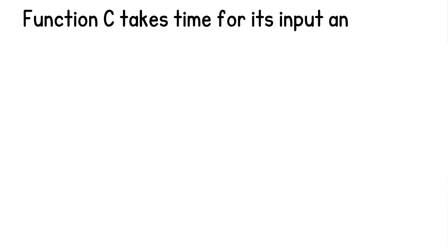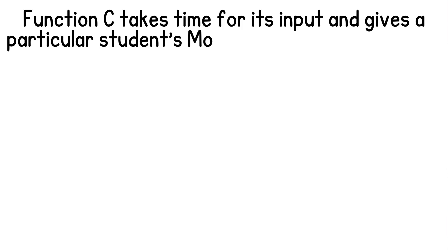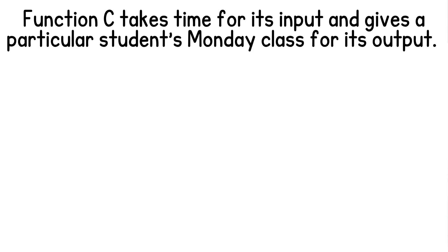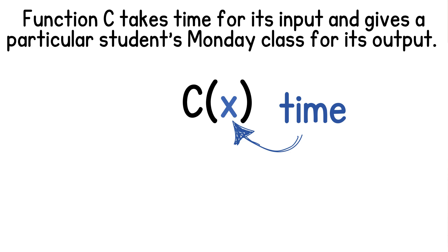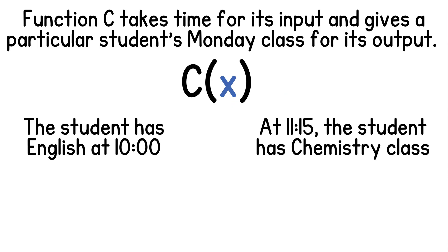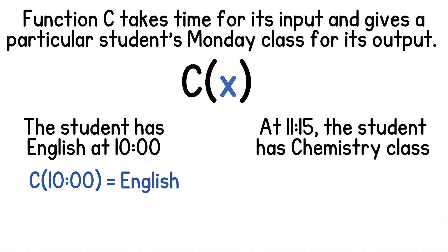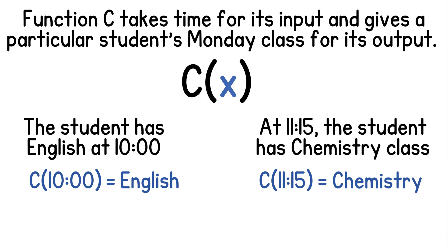Here's one last example. Function c takes time for its input and gives a particular student's Monday class for its output. We use c of x where x represents the time and c of x gives the class the student is in. The student has English at 10 o'clock, so we write c of 10 equals English. At 11:15 the student has chemistry class, so we write c of 11:15 equals chemistry.